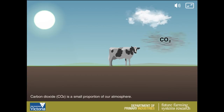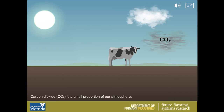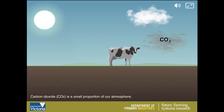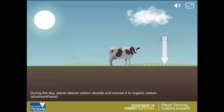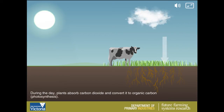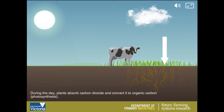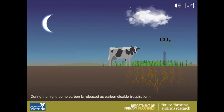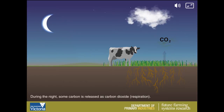Carbon dioxide is a small proportion of our atmosphere. During the day, plants absorb carbon dioxide and convert it to organic carbon. During the night, some carbon is released as carbon dioxide.